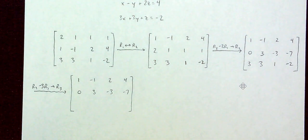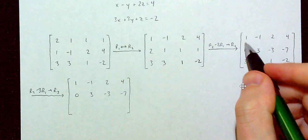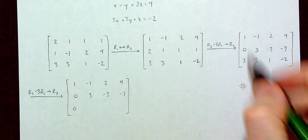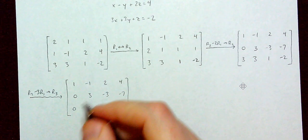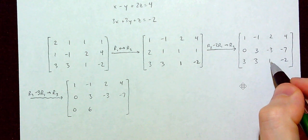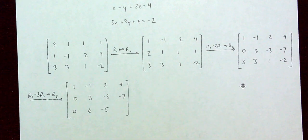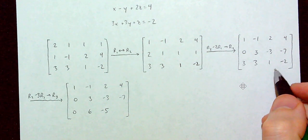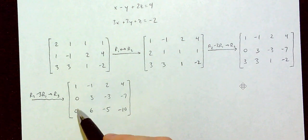Row 3 minus 3 times row 1: 3 minus 3 times 1 gives 0; 3 minus 3 times negative 1 is 3 plus 3 or 6; 1 minus 3 times 2 is negative 5; and negative 2 minus 3 times 4 is negative 10. Our first column is now in the form we want.